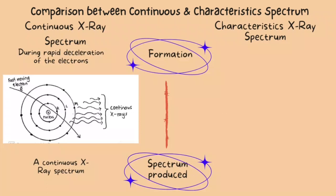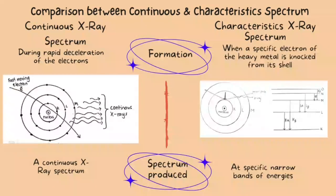While characteristic radiation is characteristic of the energy of a photon given off when a specific electron of the heavy metal is knocked from its shell. It produces an X-ray spectrum at specific narrow bands of energies.